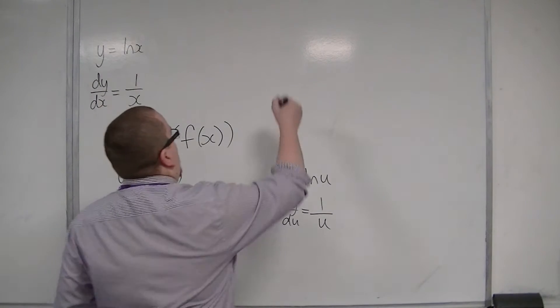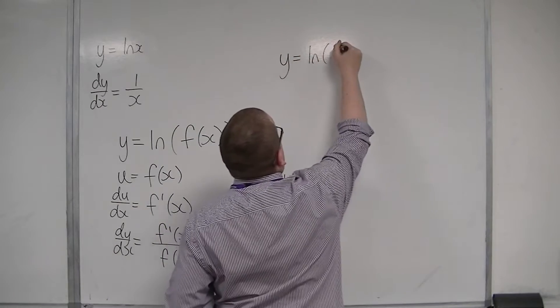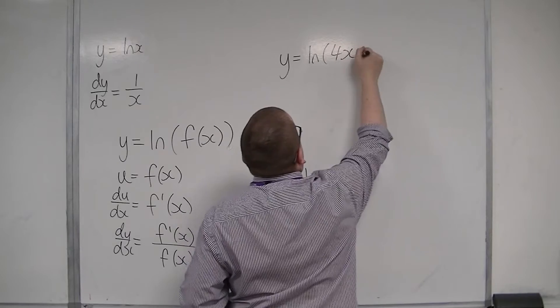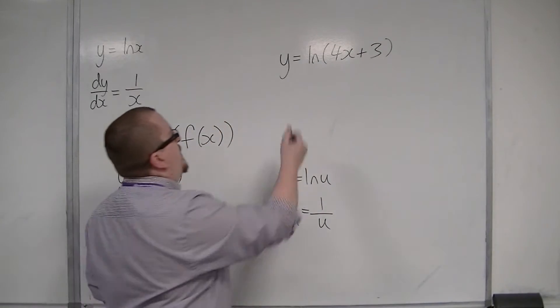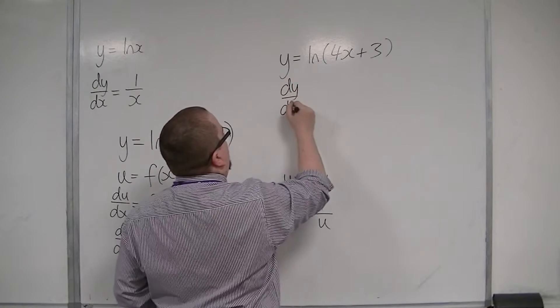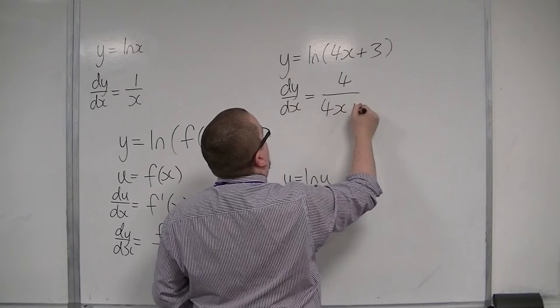Because now, if I had something like y is equal to log of, let's say, 4x plus 3, a nice simple one, then dy by dx is the derivative of 4x plus 3, which is 4, over 4x plus 3.